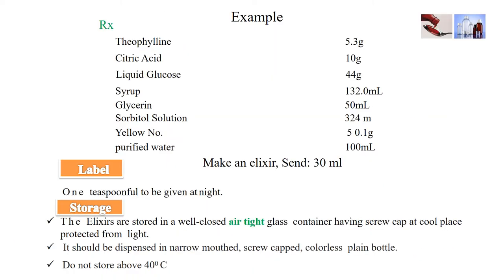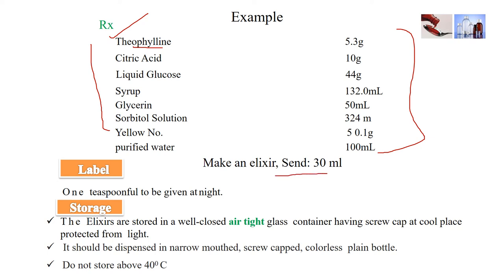Here an example is mentioned — the method of preparation of theophylline elixir. One side lists the ingredients and the other side shows the quantities in which the ingredients are added for making theophylline elixir. This formula is mandatory to remember. If you need to make 30 ml, use these particular values in the formula to obtain 30 ml.